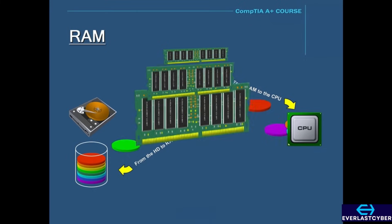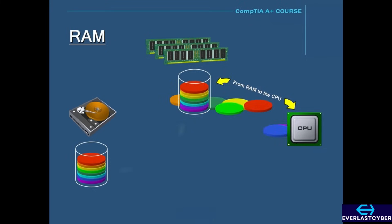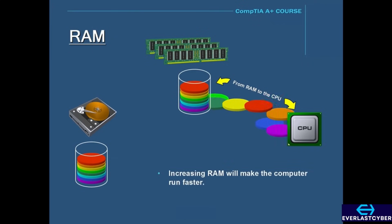To solve this problem, all you need to do is increase the amount of RAM on the computer. By increasing the memory, all the data can be loaded into RAM without the need to constantly access the hard drive. The result is a faster-performing computer.